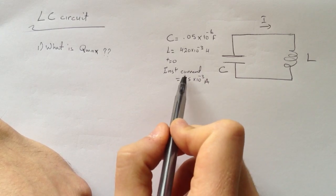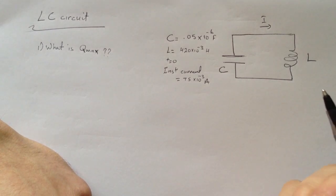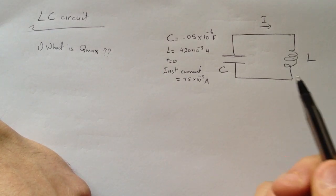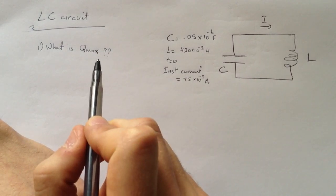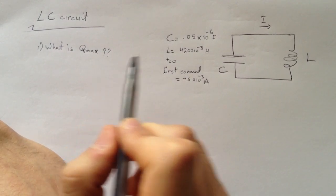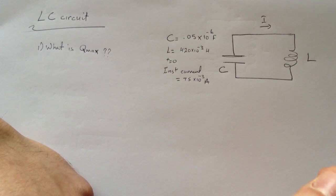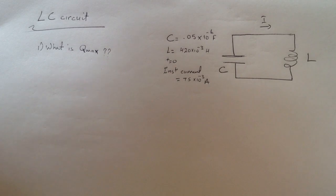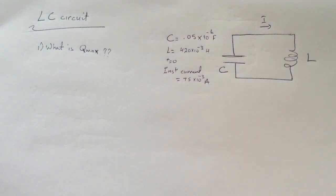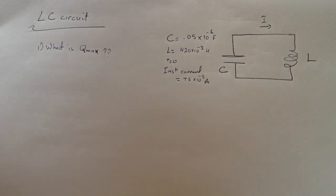They gave us that the instantaneous current at time equals zero was 75 milliampere. They told us that the total energy stored, like the stored electric and magnetic energies, are equal to one another at that time, time equals zero.